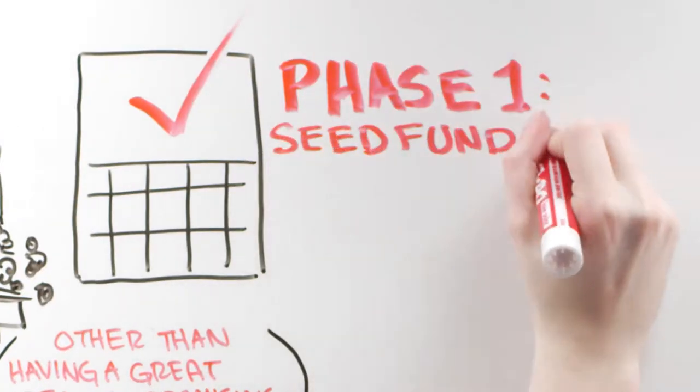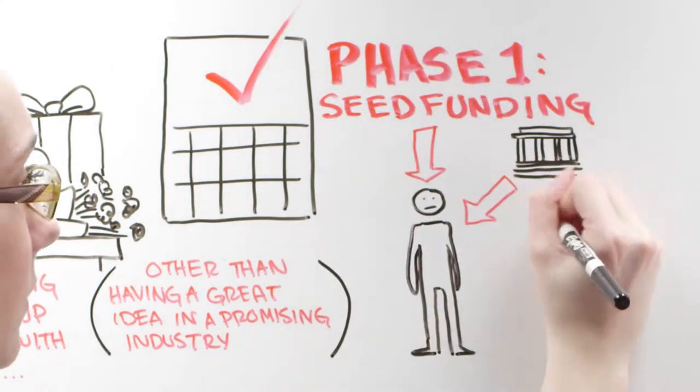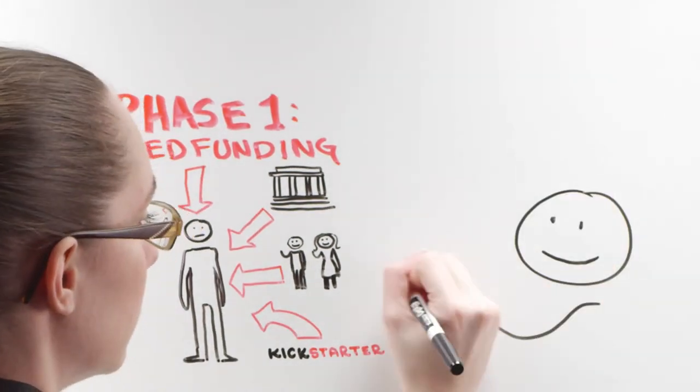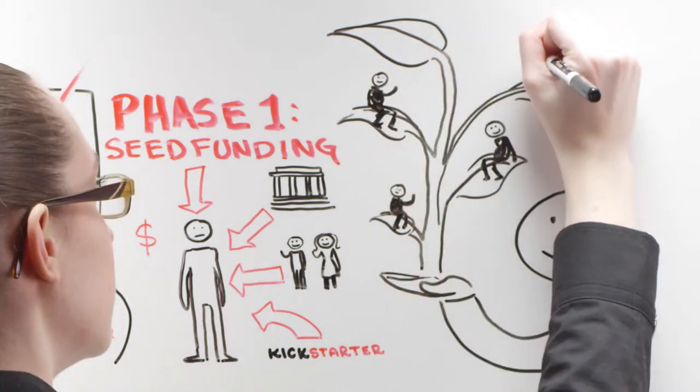Phase 1: Seed funding. Seed funding usually comes from you, the entrepreneur's bank account, angel investors, potentially mom and dad, or crowdfunding. Seed money allows you to solidify a talented team and a business plan, which is required when it comes time to talk to VCs.